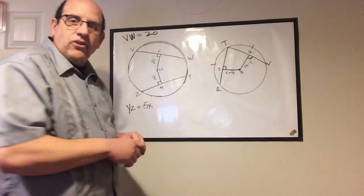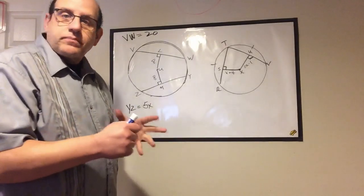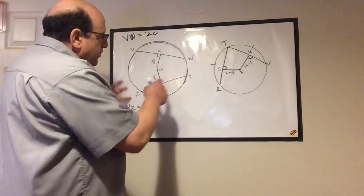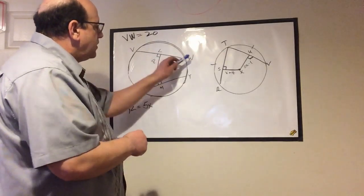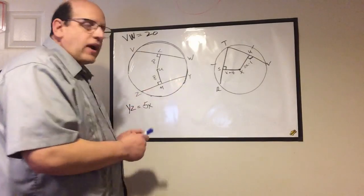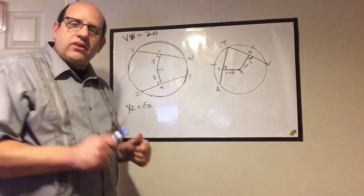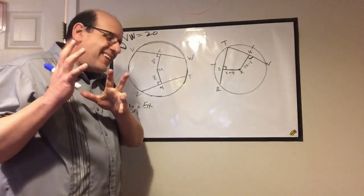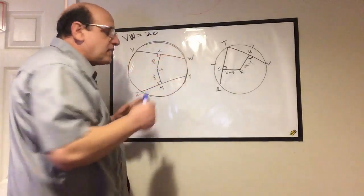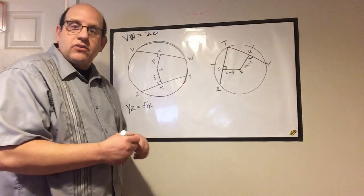They also give you extra information. They tell you that this chord is 20 and this chord is 5x. Because we know these are the same distance from the center of the circle, these two things have to be the same. It's just like putting an equal sign between them.